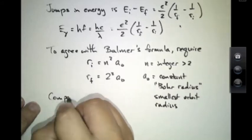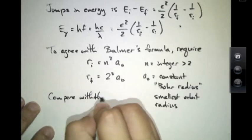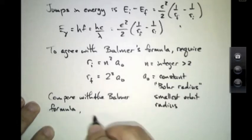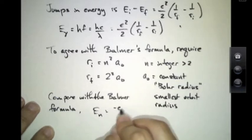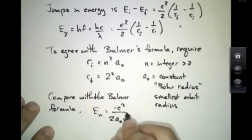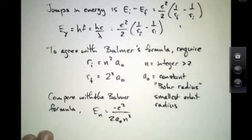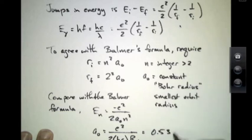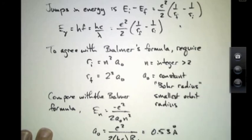Comparing with the Balmer formula, the nth energy level is simply minus e squared over 2A₀n squared. Comparing with the Balmer formula, this constant A₀ is given by e squared over 2hc times the Rydberg constant, and could therefore be calculated using the experimental value for the Rydberg constant and hc to be about 0.53 angstroms.